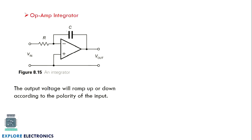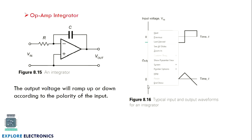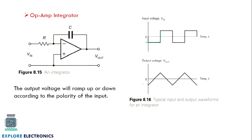Similarly, we have an integrator — the integration of the input can be taken. The integrator output will be a ramp wave, and it can also be called a ramp generator. When the input goes from 0 to 1, the output changes as a ramp wave — increasing, then decreasing, then increasing again as the input voltage changes its value.